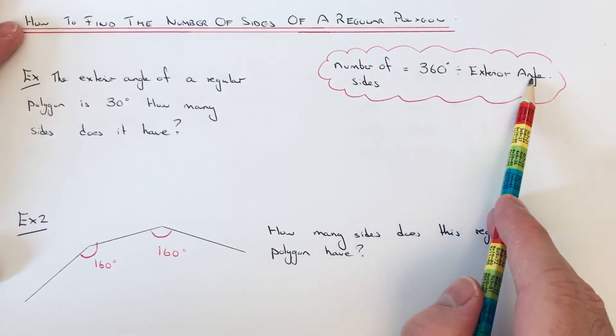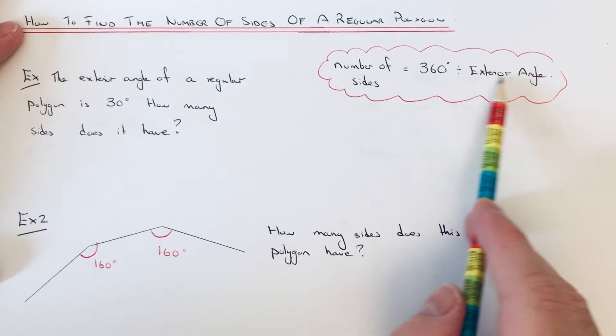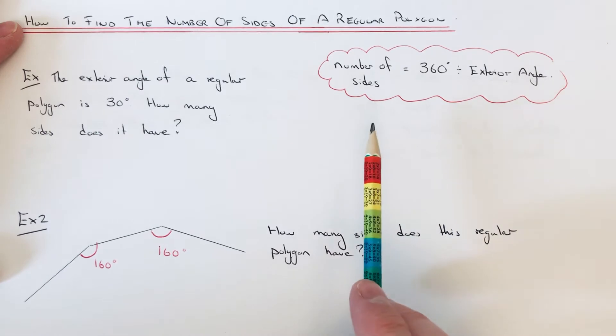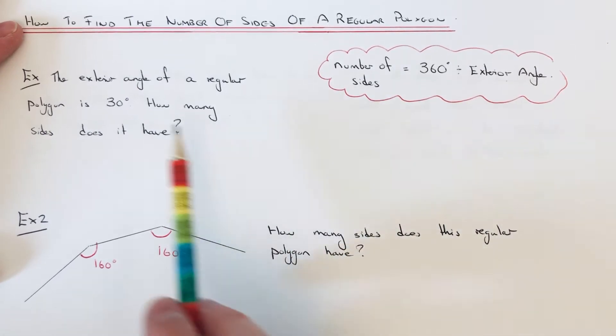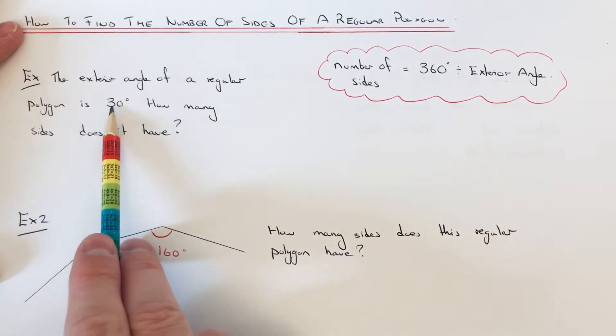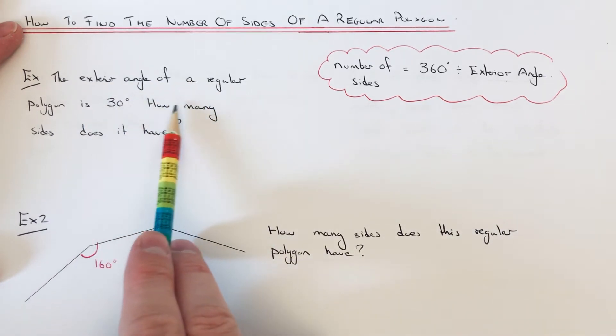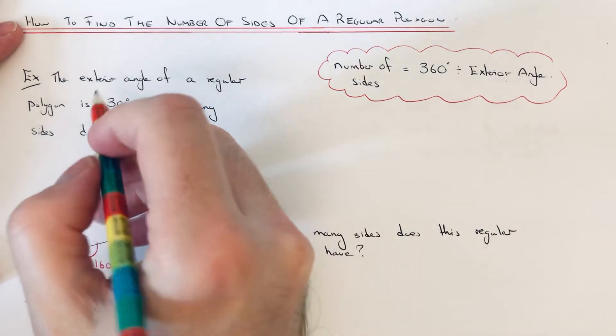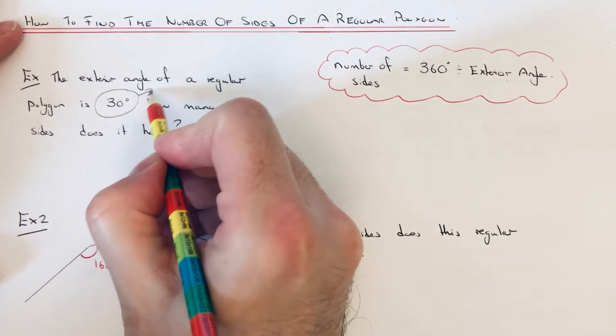You must make sure you have the exterior angle before you can work out the number of sides. Let's have a look at the example here. The exterior angle of a regular polygon is 30 degrees. How many sides does it have? We're given the exterior angle.